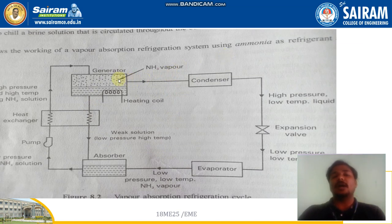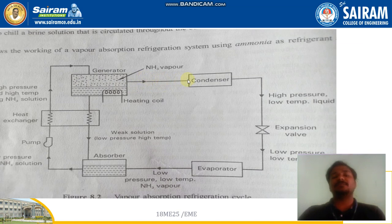The strong ammonia solution arriving at the condenser is in vapor form, at high pressure and high temperature. In the condenser, heat is rejected from the refrigerant to the surroundings, causing the ammonia to change phase from vapor back to liquid. The temperature is reduced while the pressure remains high, so the ammonia becomes a high-pressure, low-temperature liquid.